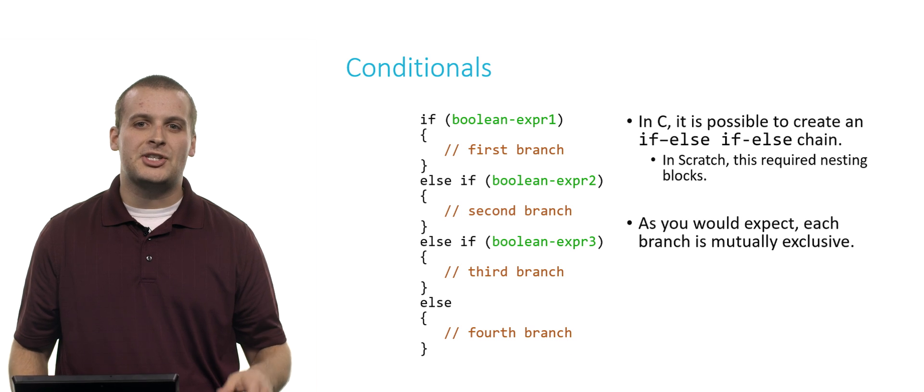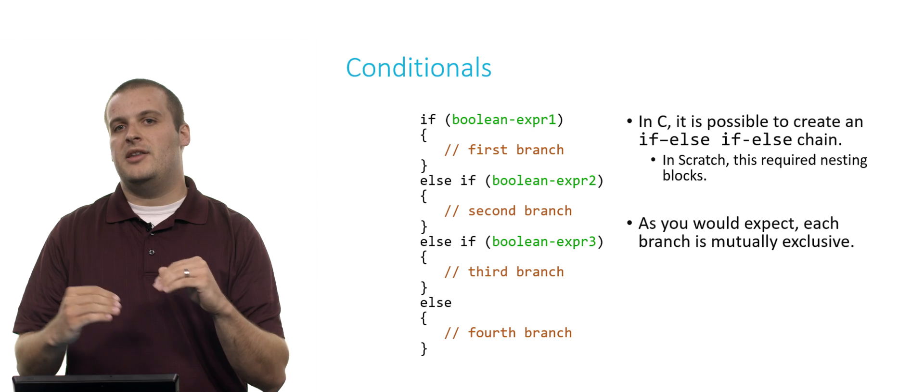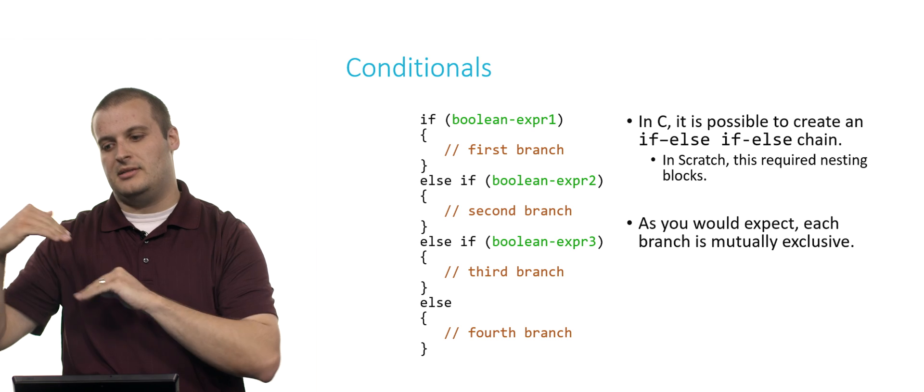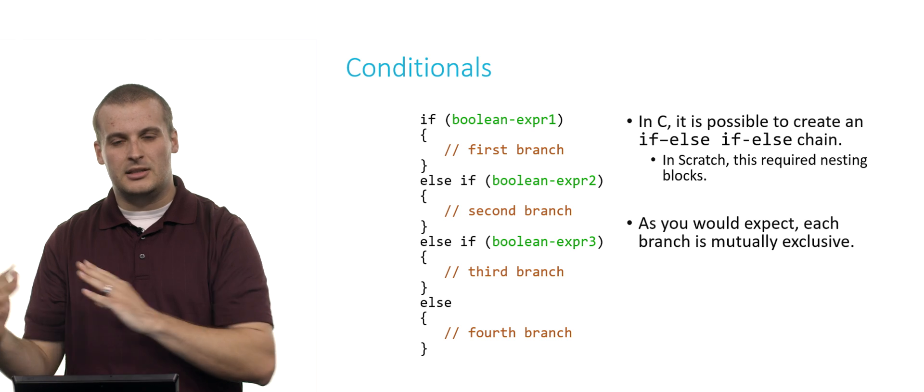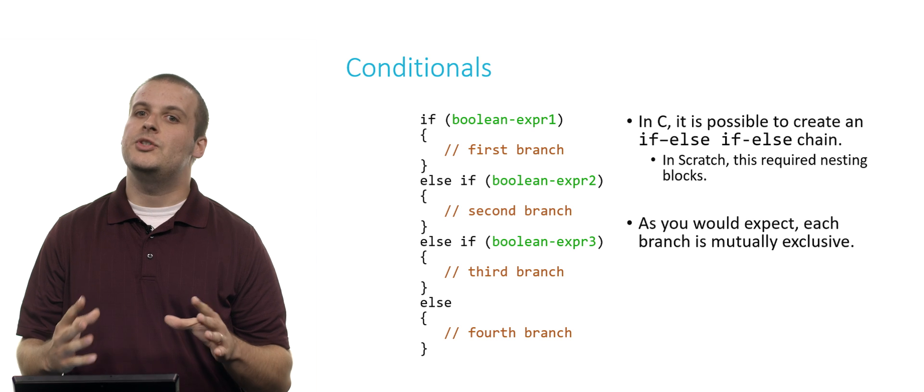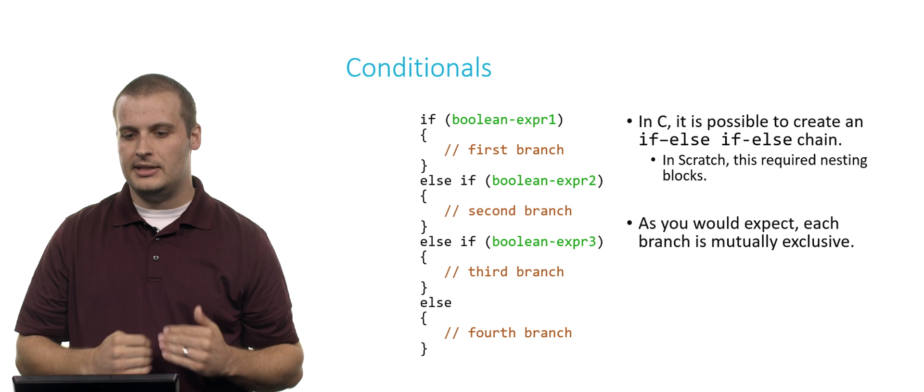In C, it's possible to create an if-else-if-else chain. And in fact, you can have if-else-if-else-if-else-if and so on and so on and so on. In Scratch, this required nesting the blocks. You had an if-else and then you had to put another one inside of the else and so on and so on and it got kind of nested and complicated. But in C, we don't have to do that. We can actually just have it be a chain like this.